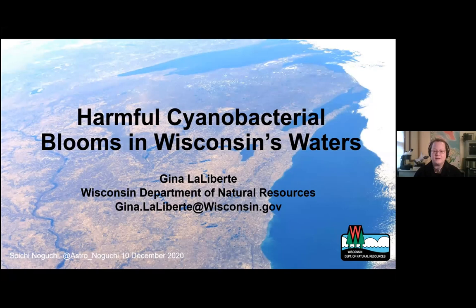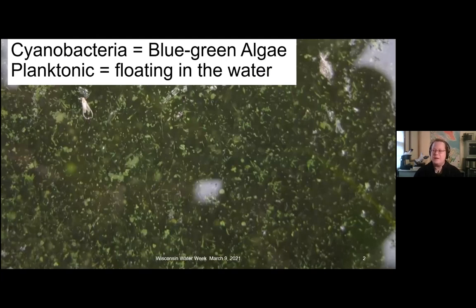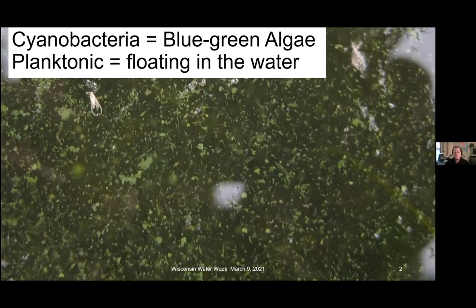Thank you for joining us this morning to learn more about harmful cyanobacterial blooms. I want to start by introducing some of the terms I'm going to be using. When I talk about cyanobacteria, that's the same thing as blue-green algae — cyanobacteria is just a more scientific term. Planktonic cyanobacteria are those that grow floating in the water, usually concentrated towards the surface of a lake, but they can actually grow throughout the water column. Cyanobacteria are in all water bodies in at least some small numbers.